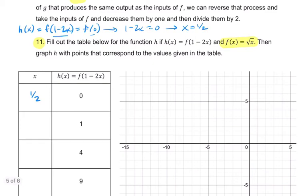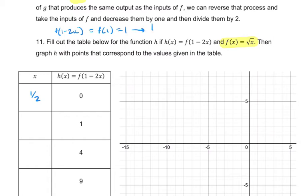And let's keep going. Now we want to know when does it have an output of 1. Well, let's repeat the process. f of x has an output of 1, looking at square roots when the input is 1. So f of 1 equals 1. So I want to know when does f of 1 minus 2x equal f of 1. That happens when 1 minus 2x equals 1. And again, you subtract 1 and divide by negative 2, and that's 0. So when x is 0, the output is 1.